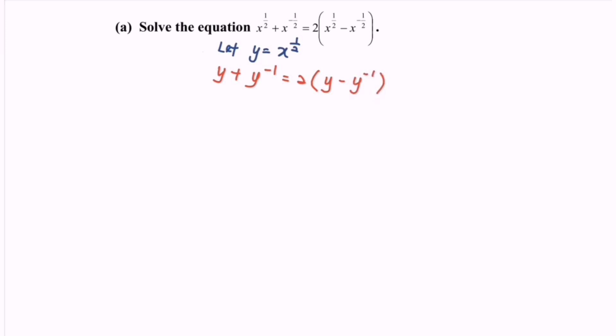So rewrite the situation: y plus 1 over y equals to 2 multiplied with y minus 2 over y.